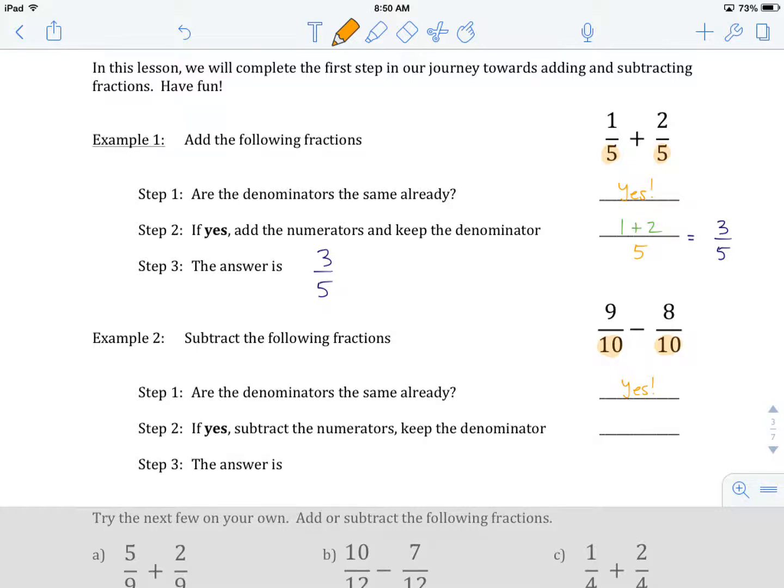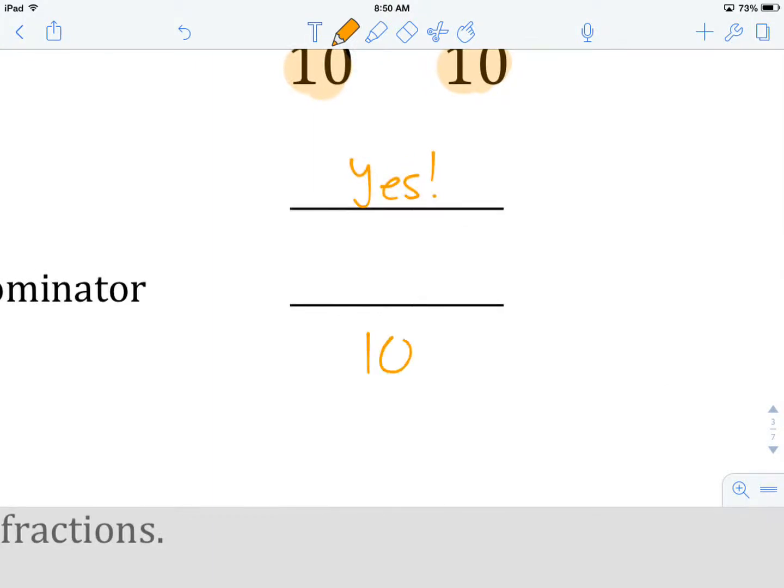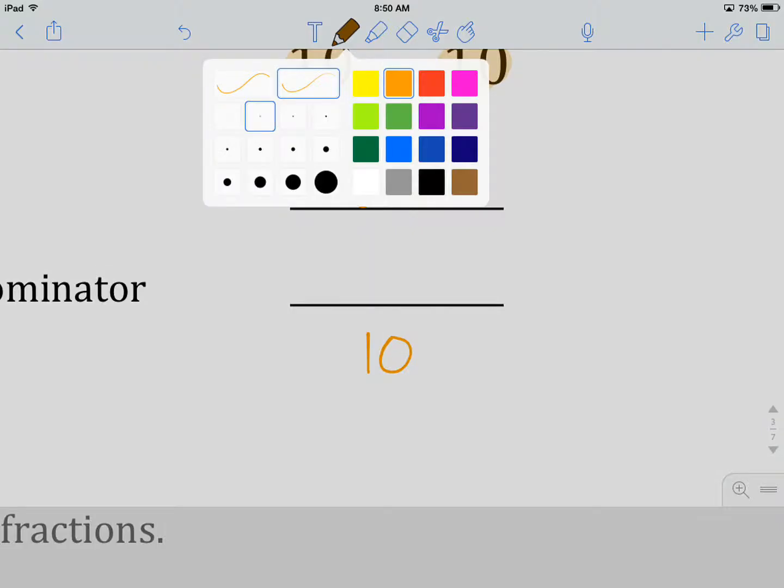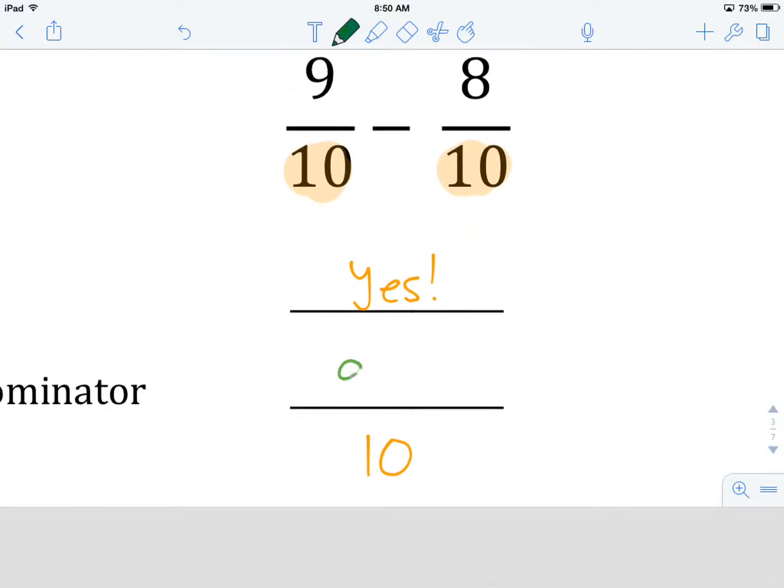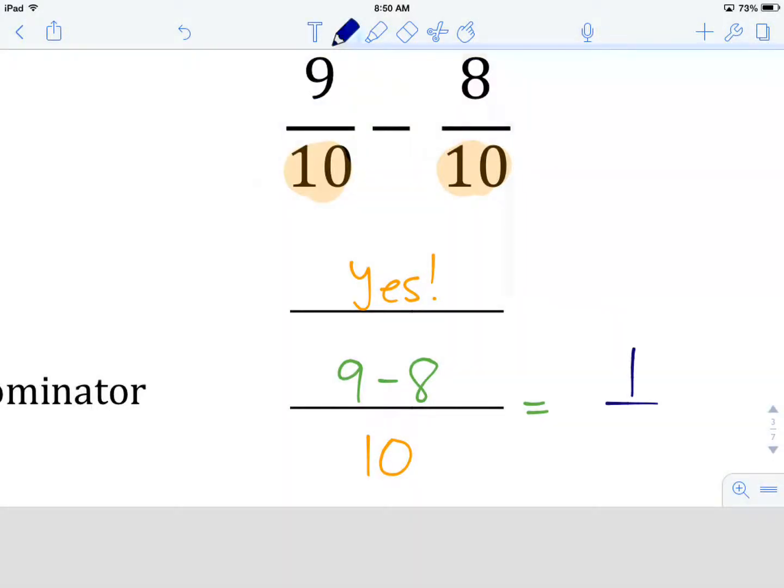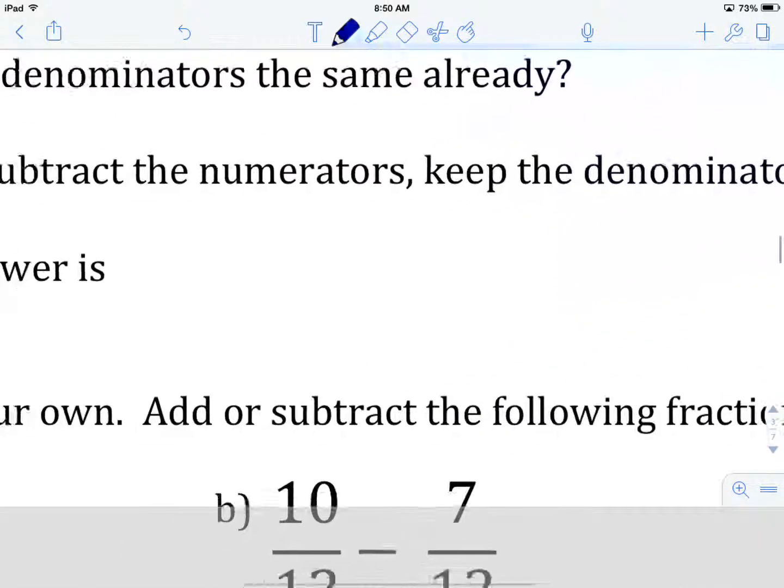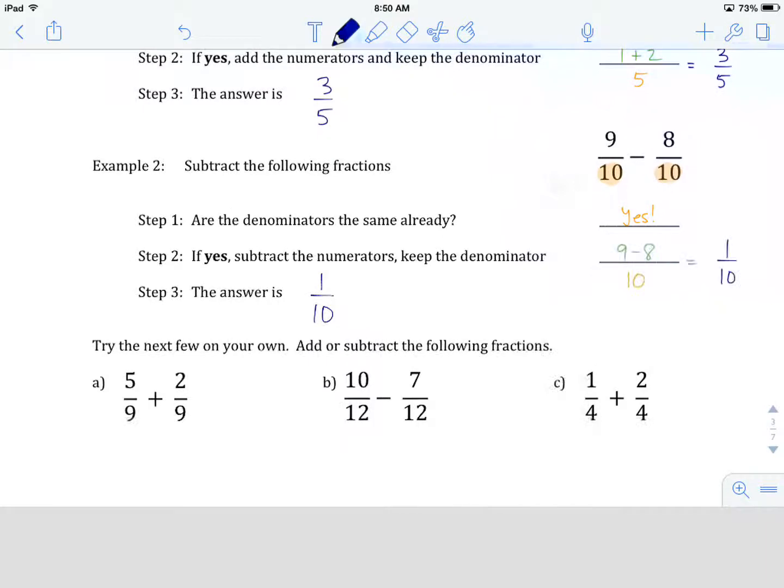If yes, my denominators are already the same, then I'm going to subtract the numerators and keep the denominator. My denominator is 10, I'm going to put that right there, and then I'm going to subtract. That is going to be 9 minus 8, and that's going to give me 1, and I keep my denominator, that's 10. My answer then is going to be 1 tenth. That's how we add and subtract fractions with the same denominator.